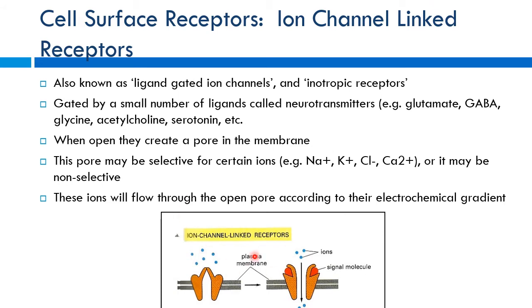Ion channel linked receptors — also known as ligand-gated ion channels or ionotropic receptors — are very common drug targets. When a drug binds, it causes the channel to open or close, affecting ion flow. Each channel may be specific: some for chloride, some for sodium. These are very important for neurotransmitters like glutamate and GABA. GABA is the main inhibitory neurotransmitter — like brakes on the system — while glutamate is the main excitatory neurotransmitter.